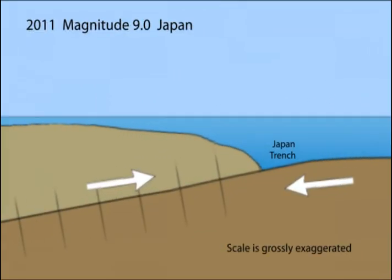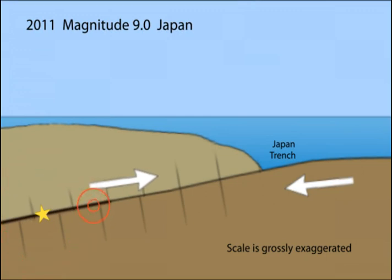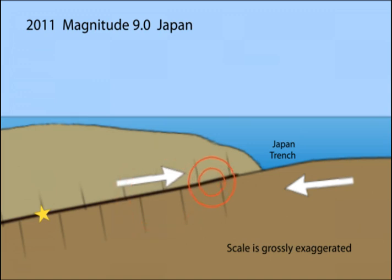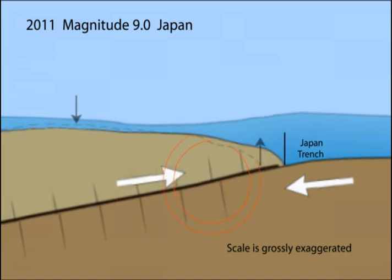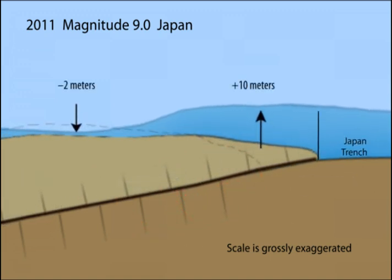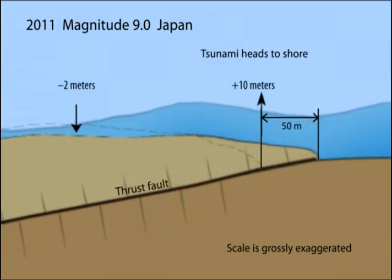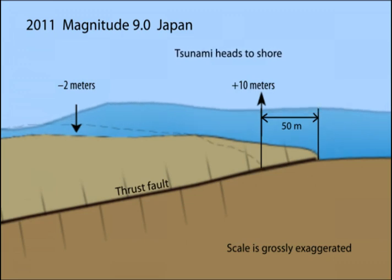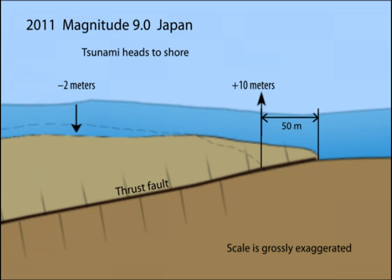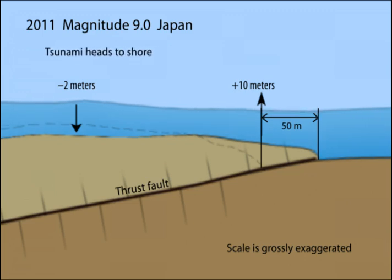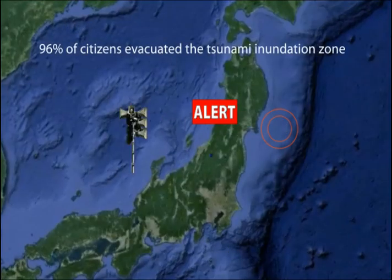What would that look like in cross-section? During the rupture process, the overriding plate slid up the west-dipping fault plane. That uplifted the seafloor by 10 meters, producing the local tsunami that rushed onshore within 20 minutes of the earthquake, and the distant tsunami that spread over the Pacific Ocean basin.